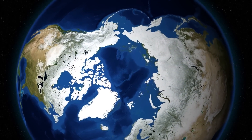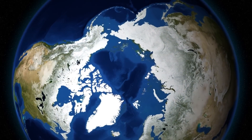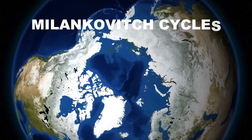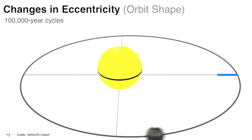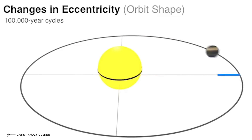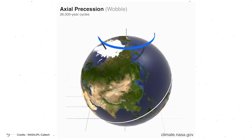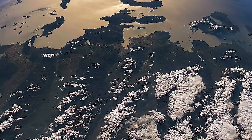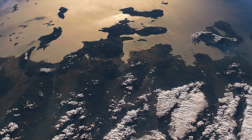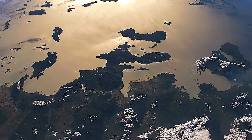The leading cause of interglacial periods is the variations in the Earth's orbit and inclination, known as Milankovitch cycles. These cycles describe changes in the shape of the Earth's orbit, the tilt of the Earth's axis, and the orientation of the Earth's axis. Milankovitch cycles influence the amount and distribution of solar radiation that reaches Earth, affecting the global climate.